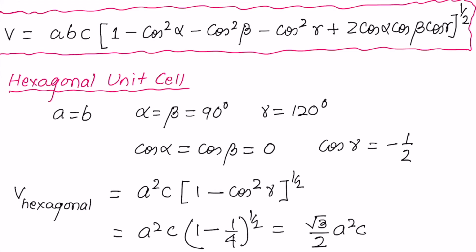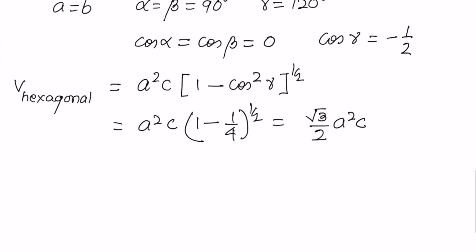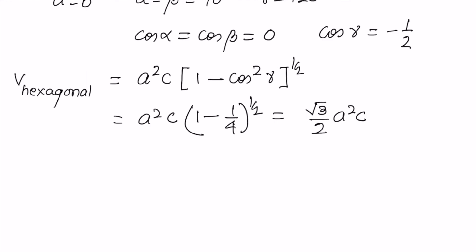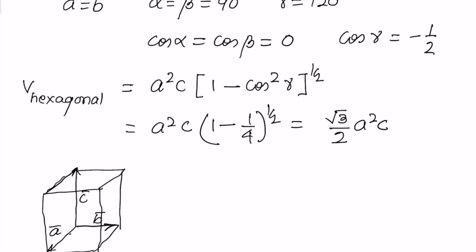Of course you could have obtained this volume much more directly and simply, because the hexagonal unit cell is actually a hexagonal prism — just the area of the base times the height c. The base consists of two equilateral triangles of side length a, and the area of an equilateral triangle of side a is (a²/2)·cos60°, confirming the result.